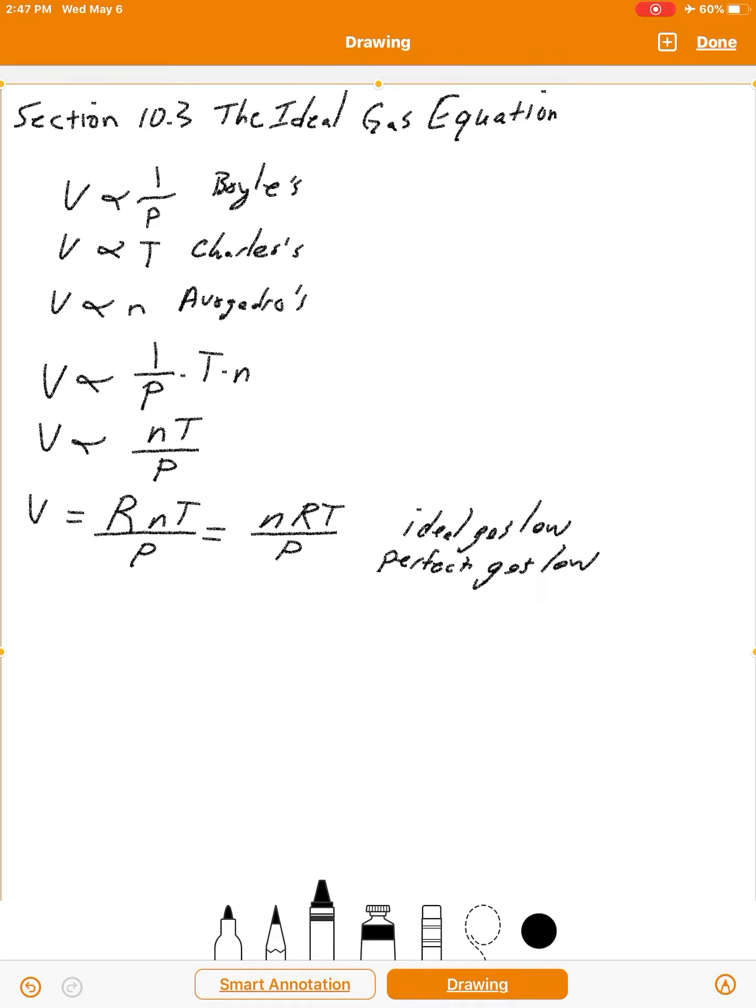Now, let's talk a little bit about R. R is called the universal, meaning it works for any ideal gas, constant. And the value of R depends on the units you use. If you use atmospheres for pressure and liters for volume, and we definitely want to use moles and Kelvin for N and T, the value of R would be 0.082057. It can take on other units as well, but that's the one that you'll use most of the time.